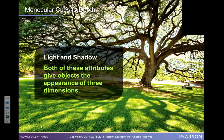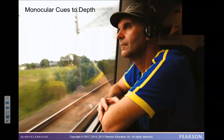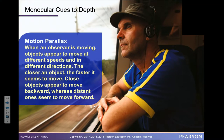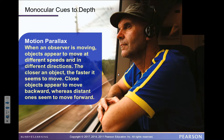Light and shadow both give objects the appearance of three dimensions. Motion parallax: when an observer is moving, objects appear to move at different speeds and in different directions. The closer an object, the faster it seems to move. Close objects appear to move backward whereas distant ones seem to move forward.